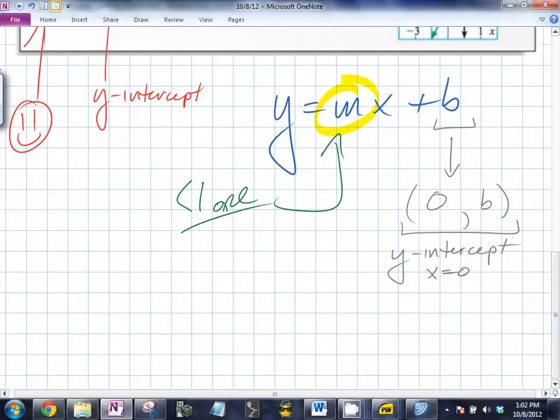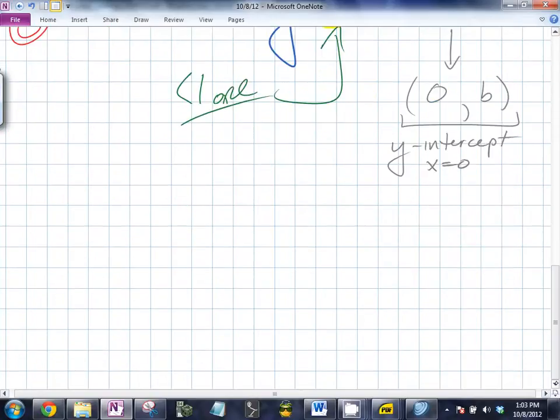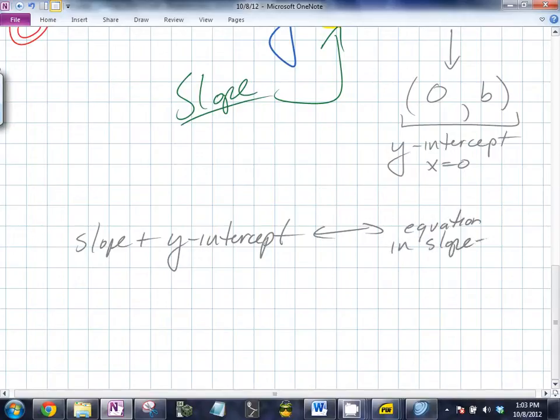This is giving you the slope and the intercept. So if you have the intercept and the slope, what can you write? A graph. Yeah, if you have the slope and the y-intercept, you can write the equation in what form? Slope intercept. And if you have the equation in slope-intercept form, what can you find? The slope and the intercept, the y-intercept.